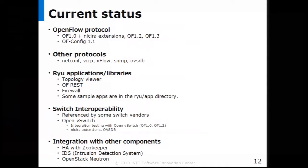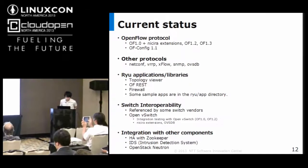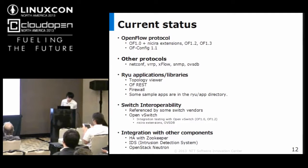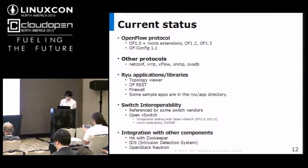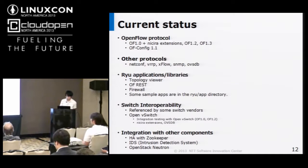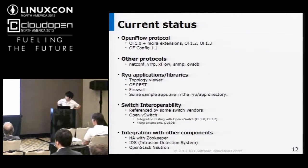I'll explain Ryu's current status and working items. Some items are work in progress and discussed on the mailing list. First, regarding OpenFlow protocol: currently Ryu fully supports OpenFlow 1.0 with Nicira extensions. And OpenFlow 1.2 and OpenFlow 1.3 including unit tests. In addition, Ryu supports the OpenFlow config protocol — a configuration and management protocol for OpenFlow switches. The Ryu community is very active, and some implement the latest OpenFlow protocol quickly. The latest OpenFlow protocol is OpenFlow 1.3.